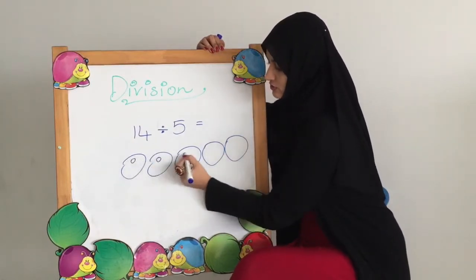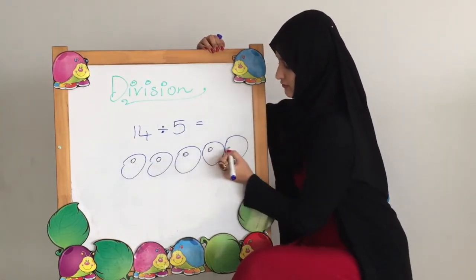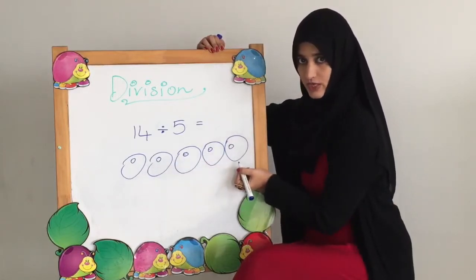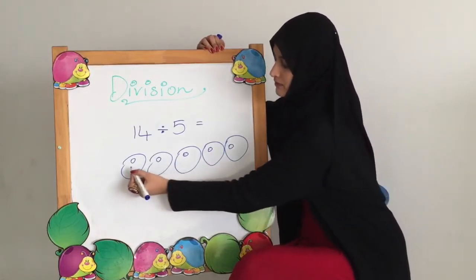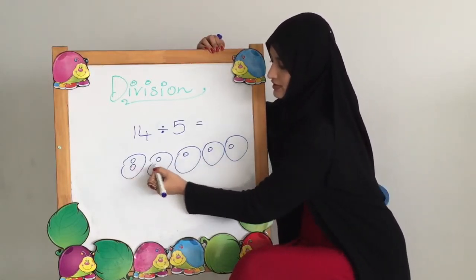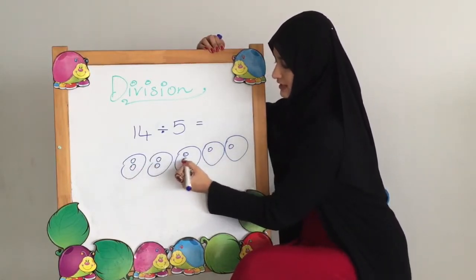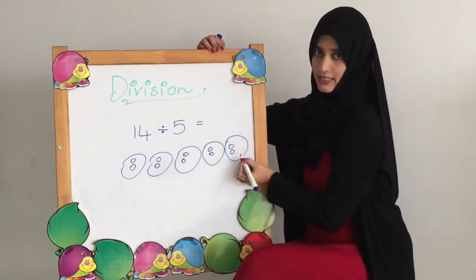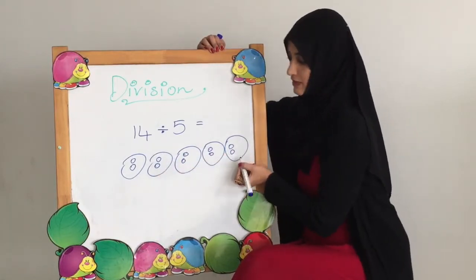1, 2, 3, 4, 5. Everyone has 1. 6, 7, 8, 9, 10. Everyone got the second ball.